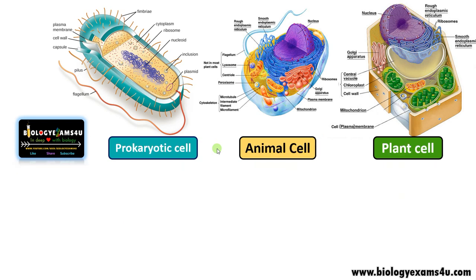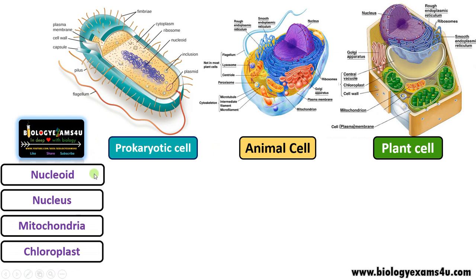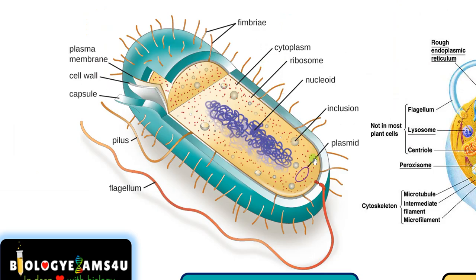Now moving into other structures: nucleoid, nucleus, mitochondria and chloroplast. Let's begin with nucleoid. Nucleoid is present only in prokaryotic cell. In prokaryotes, true nucleus is absent, meaning the genetic material is not surrounded by a membrane. The region where genetic material is present in a prokaryotic cell is called the nucleoid region.